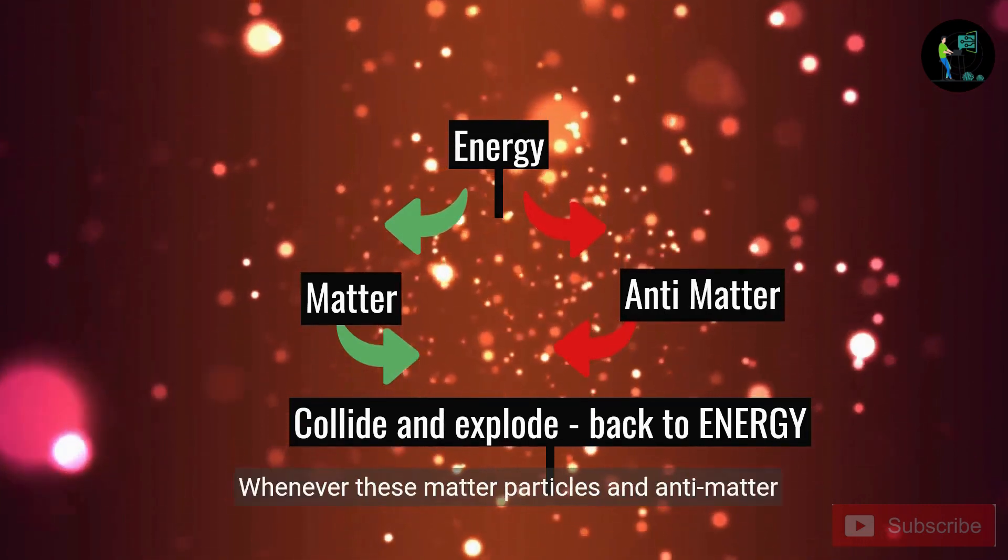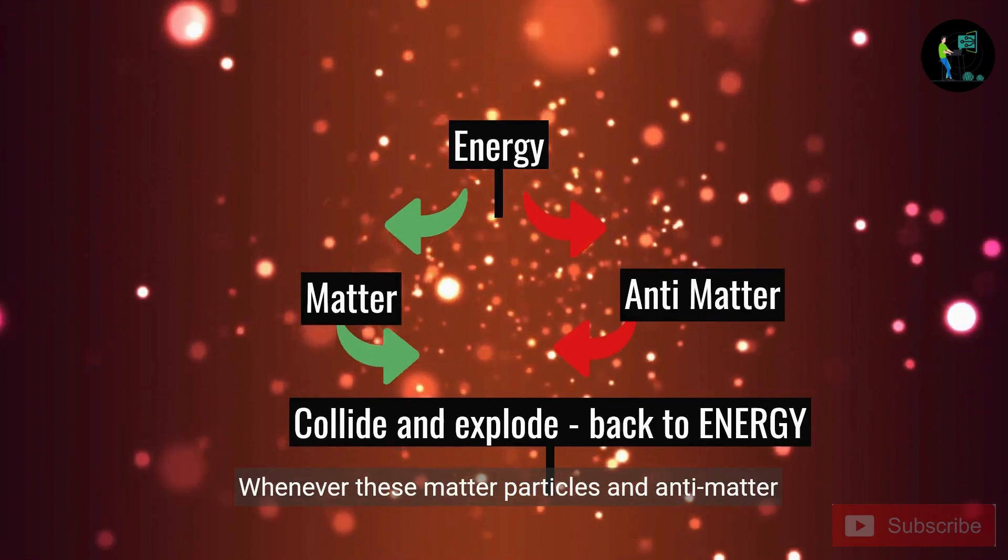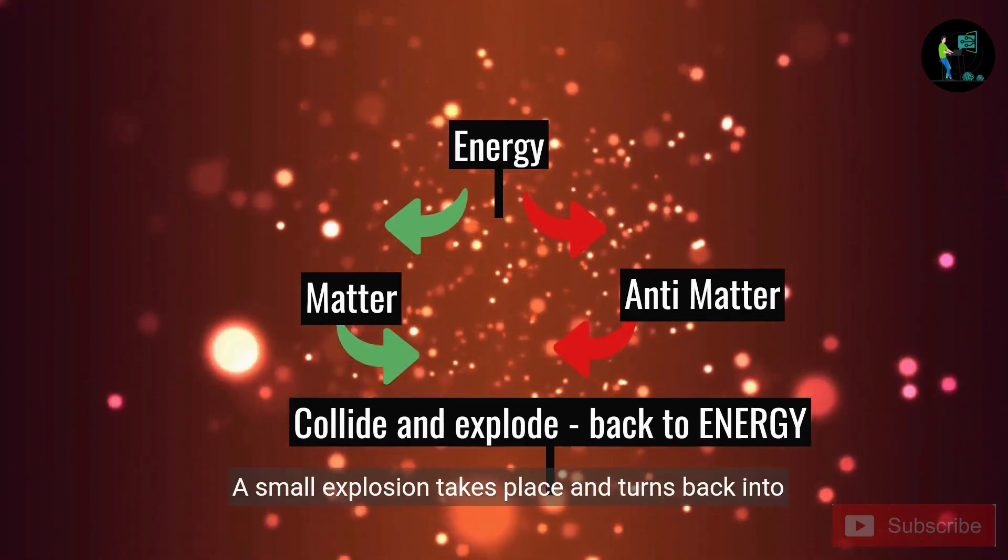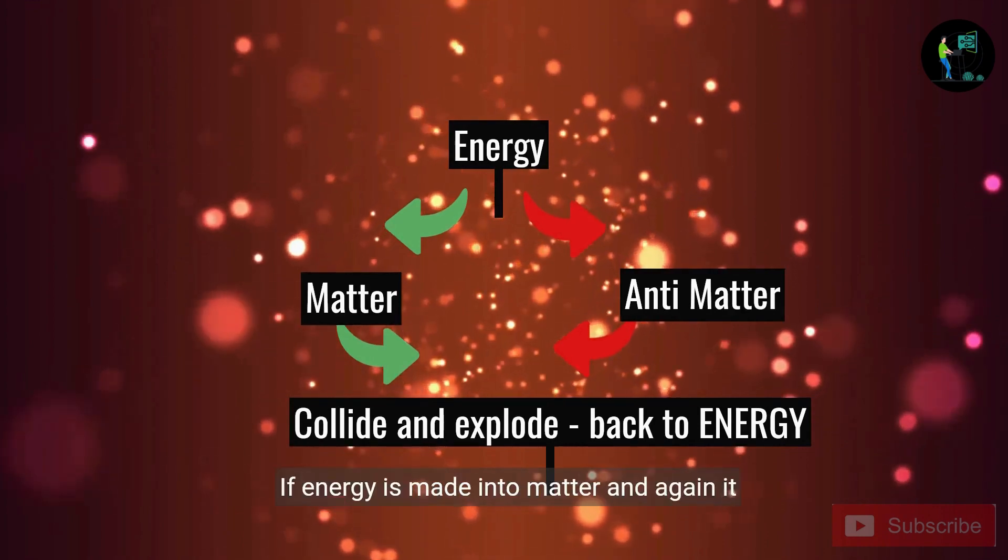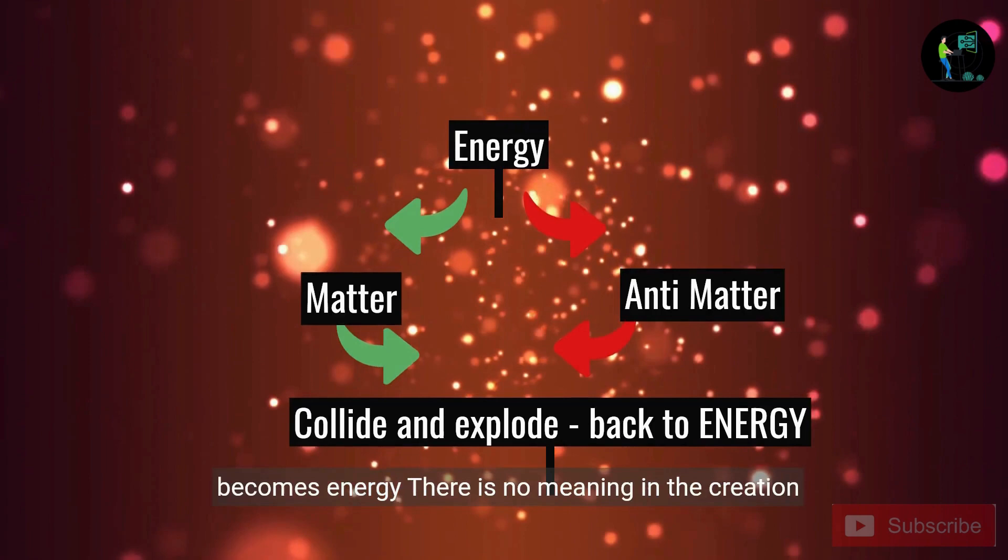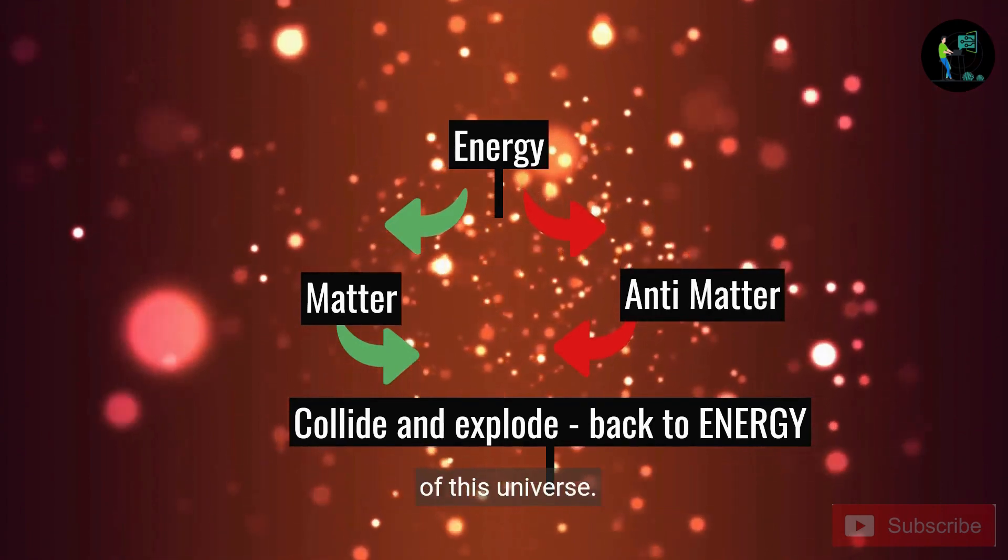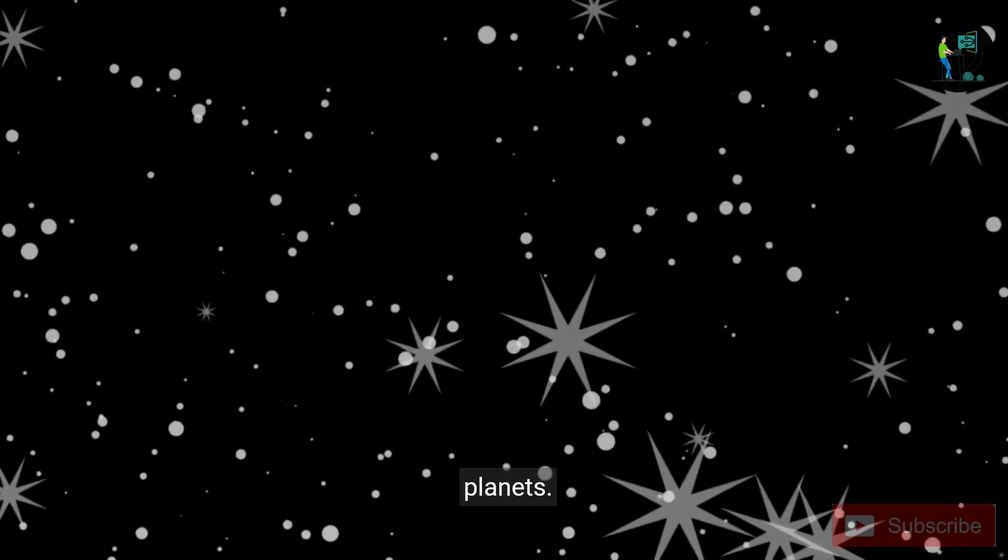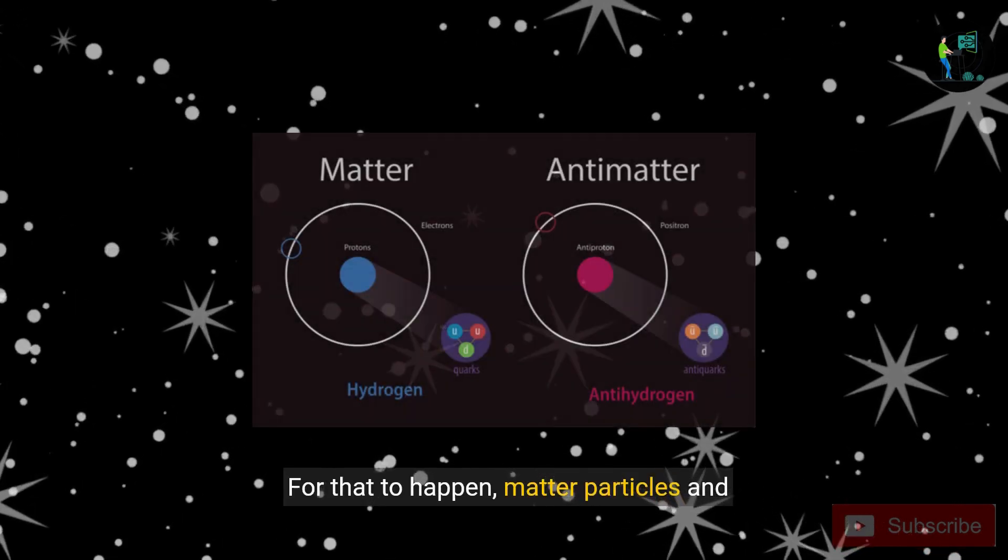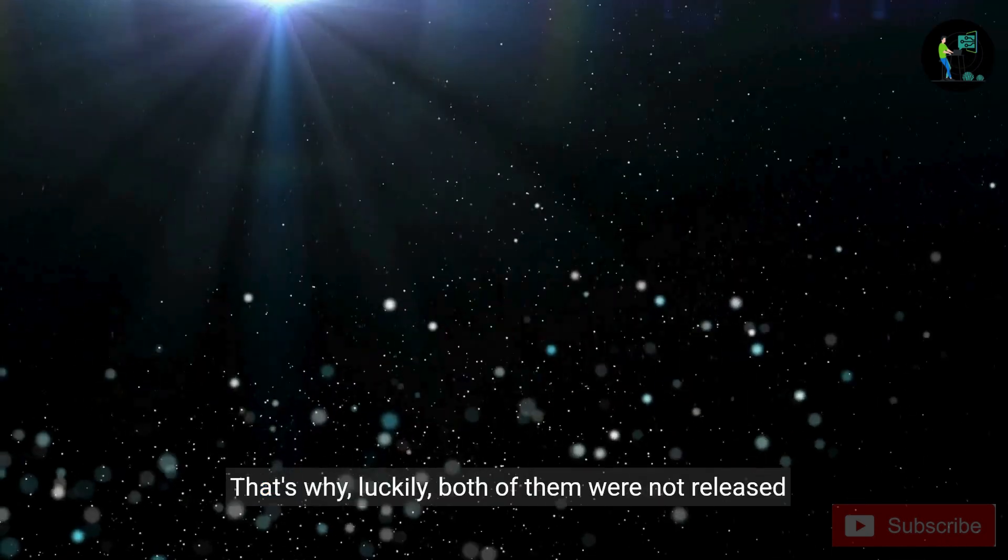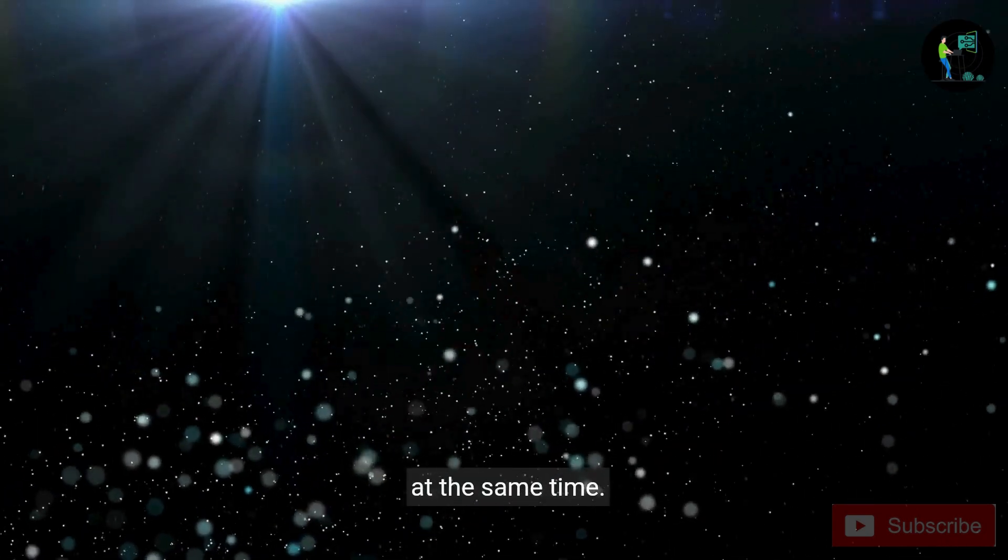Whenever these matter particles and antimatter particles collide, a small explosion takes place and turns back into energy. If energy is made into matter, and again it becomes energy, there is no meaning in the creation of this universe. Now the stars of the universe must be made into planets. For that to happen, matter particles and antimatter particles cannot be equal. That's why, luckily, both of them were not released at the same time.